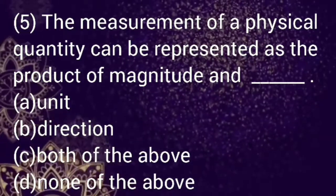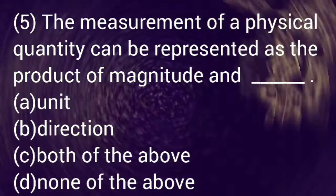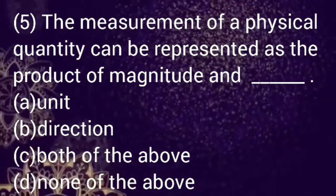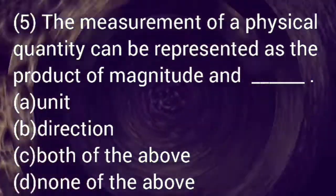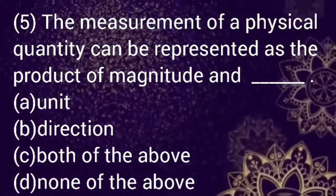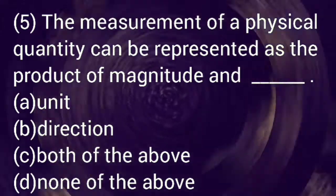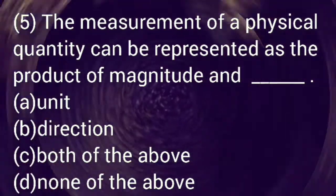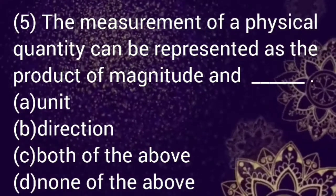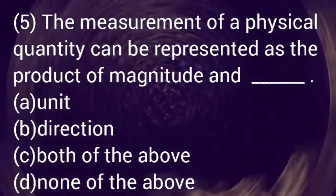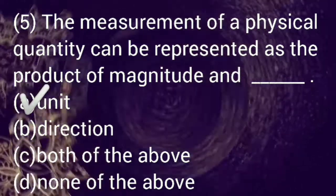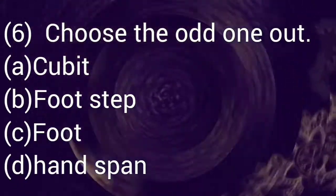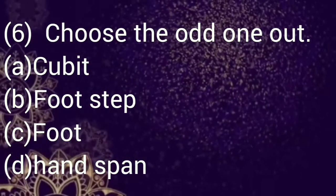Let us move on to question number five. The measurement of a physical quantity can be represented as the product of magnitude and dash. Option a: unit, b: direction, c: both of the above, d: none of the above. Select your answer. The correct option is a, unit.